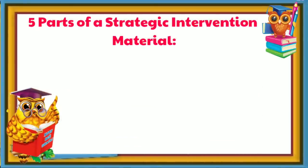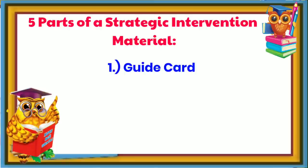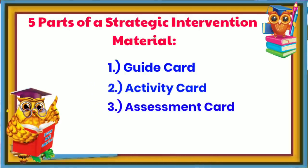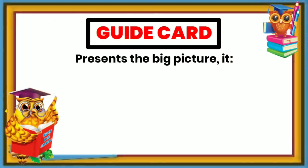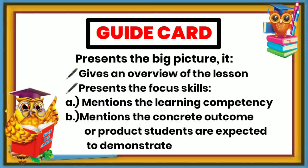There are five parts of a strategic intervention material: the guide card, activity card, assessment card, enrichment card, and reference card. The guide card presents the big picture — it gives an overview of the lesson and presents the focus skills, mentions the learning competency, and mentions the concrete outcome or product students are expected to demonstrate.